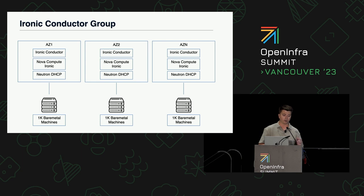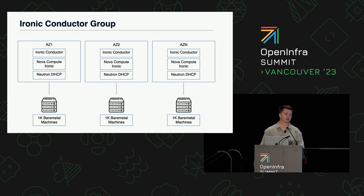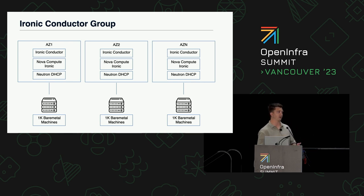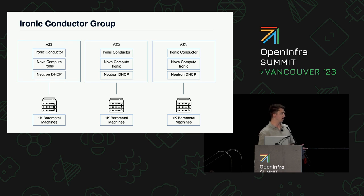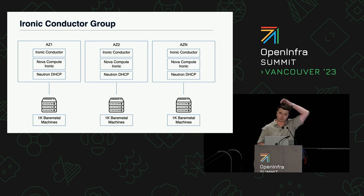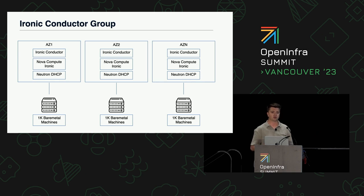One other thing conductor groups help us do is when you roll out changes you can do it one AZ at a time. In a typical data center with five or six pods we can roll that out one at a time, and if we make a breaking change we'd only take out a fifth of the infrastructure at one time.